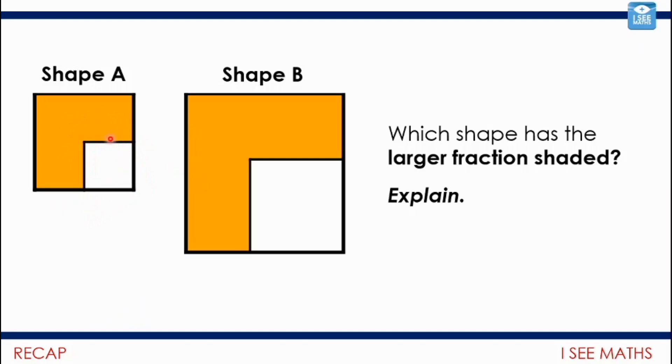So if you look at the part here, this white part that isn't shaded, that is a quarter, so three quarters must be shaded. And actually Shape B, this is less than three quarters shaded because this part here is more than a quarter of this one. I couldn't fit as many as four of this part in this whole. So actually the larger fraction that's shaded, that must be Shape A.